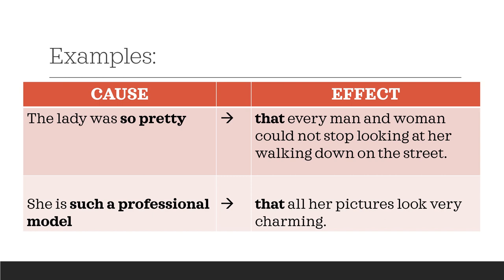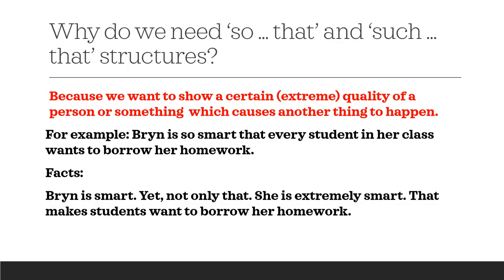In the second sentence, 'She's such a professional model' is the cause, and the effect is 'that all her pictures look very charming.' Why do we need so that and such that structures? Because we want to show a certain or extreme quality of a person or something which causes another thing to happen. For example, 'Brynn is so smart that every student in her class wants to borrow her homework.' The facts are: Brynn is smart — not only that, she is extremely smart, and that makes students want to borrow her homework.